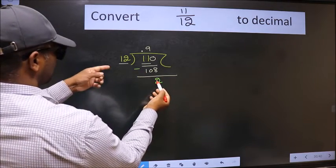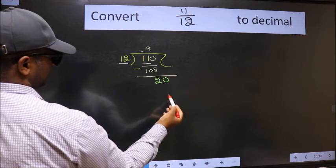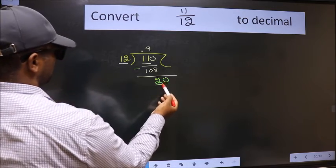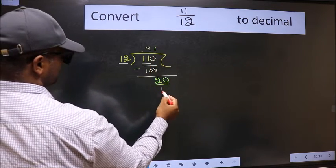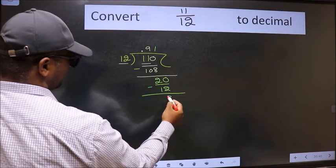2 is smaller than 12 and we already have the decimal, so we can take 0 directly. So 20. A number close to 20 in the 12 table is 12 once 12. Now we should subtract. We get 8.